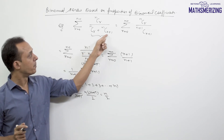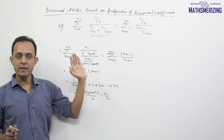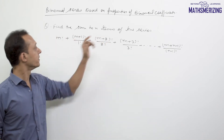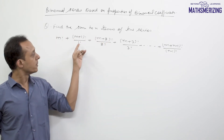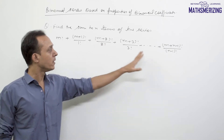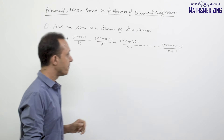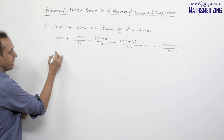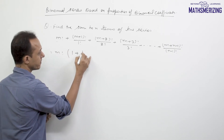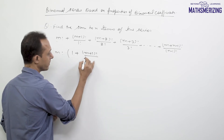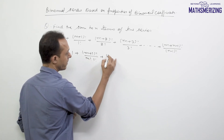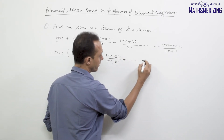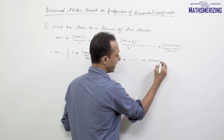In that question we used the binomial coefficient property nCr + nCr-1 = n+1Cr. Now the next question is: find the sum to n terms of the series factorial(m) + factorial(m+1)/factorial(1) + factorial(m+2)/factorial(2) + ... + factorial(m+n-1)/factorial(n-1). I'll take factorial(m) common, giving factorial(m) times the series inside.